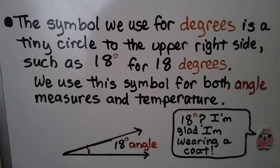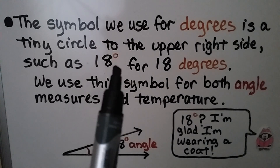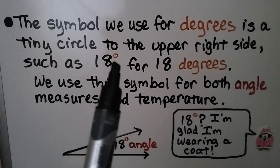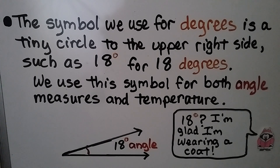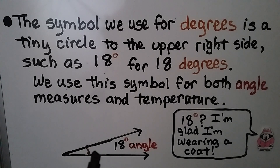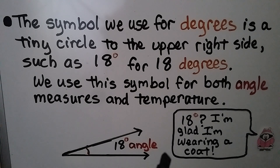The symbol we use for degrees is a tiny circle to the upper right side — such as this. So that's 18 degrees, and we use the symbol for both angle measures and temperature. So this would be an 18 degree angle, but it could also be 18 degrees outside.